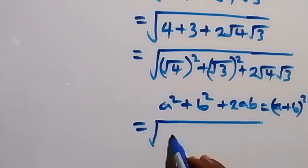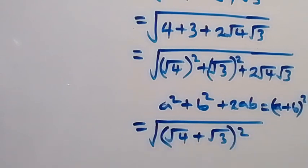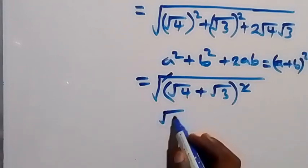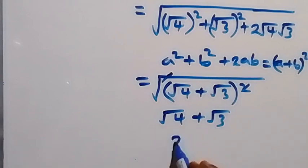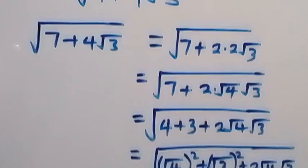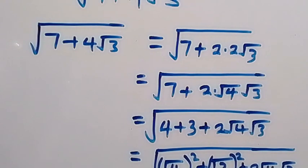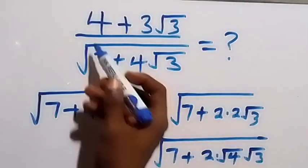Applying the identity, we can write this as square root of (root 4 + root 3)², which simplifies to root 4 plus root 3. Since root 4 is 2, this gives us 2 plus root 3. So the denominator simplifies to 2 plus root 3.